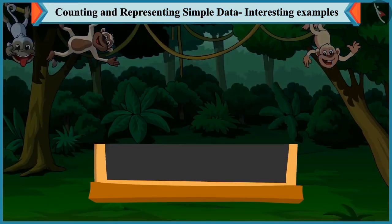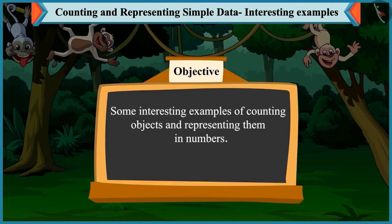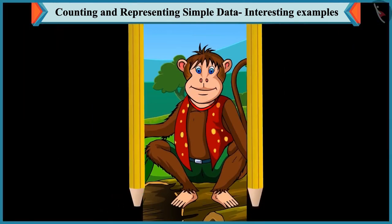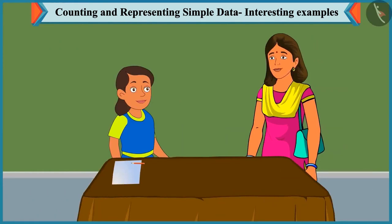Today we will see some interesting examples of counting objects and representing them in numbers. Bubbly's mother brought a box of stickers from the bazaar with different colors. Bubbly is asked to group the different colors of stickers and count them, the same way she counted vegetables and shapes.